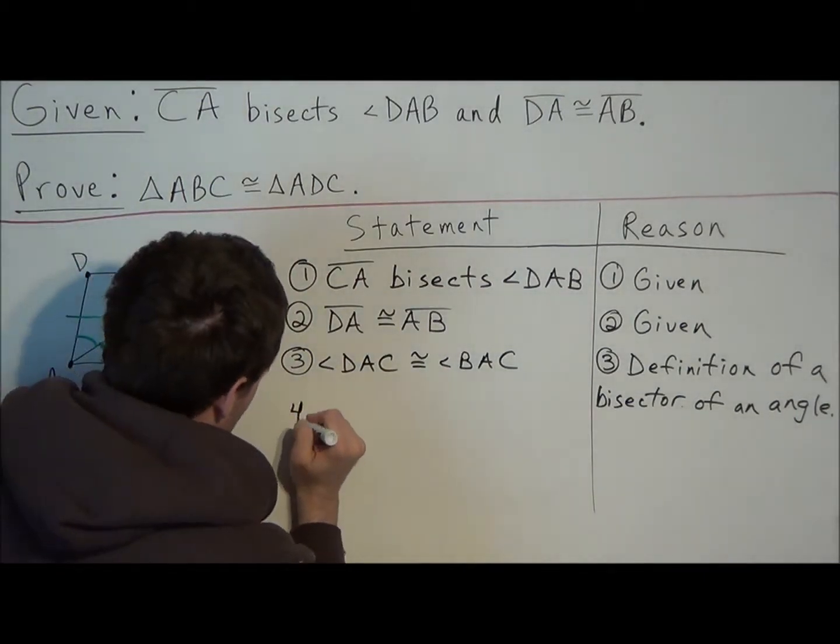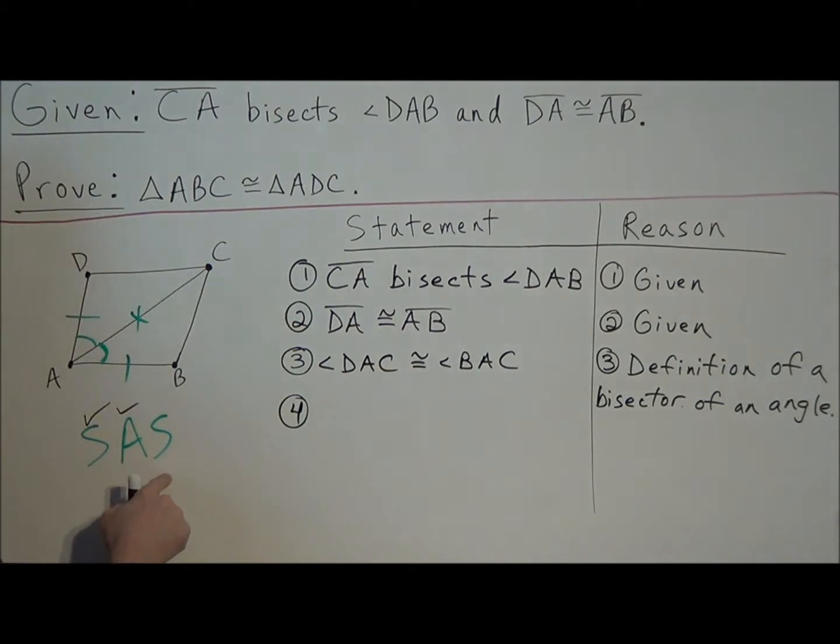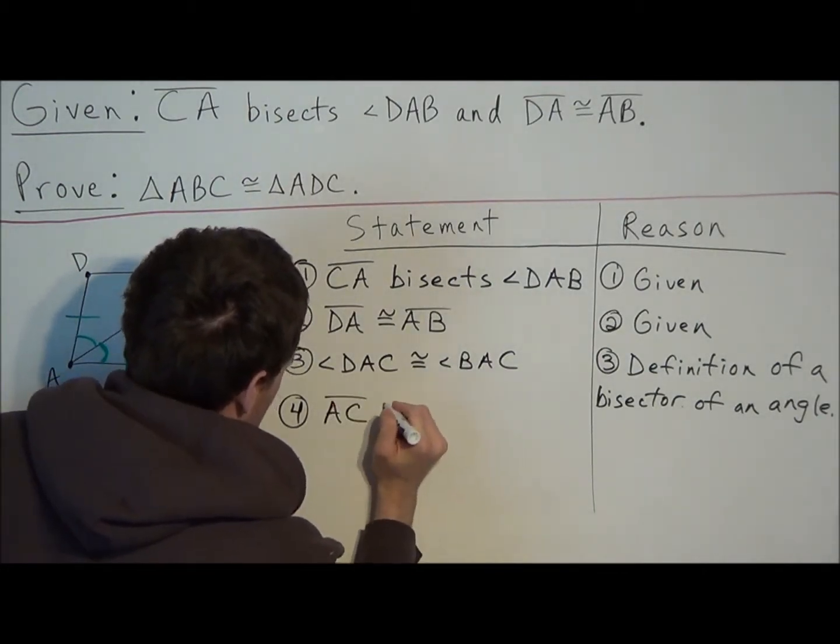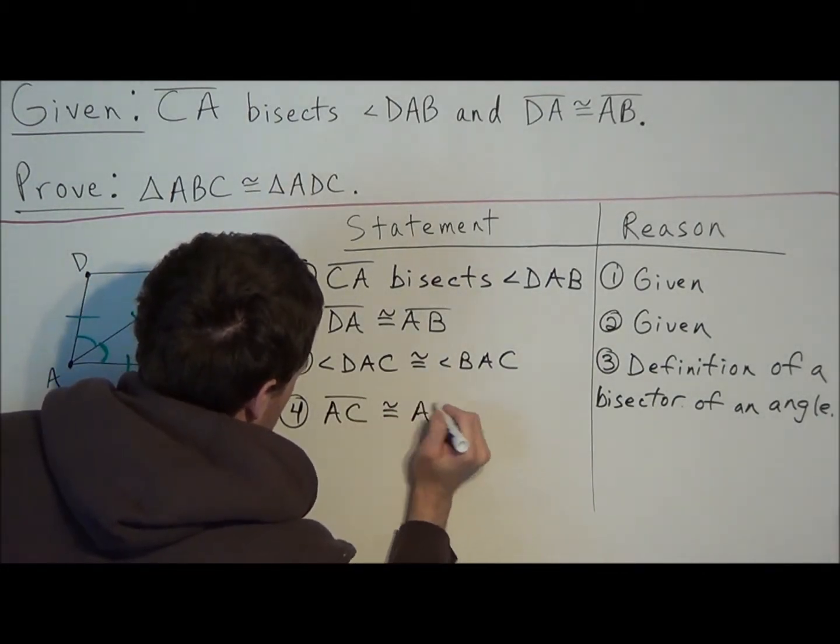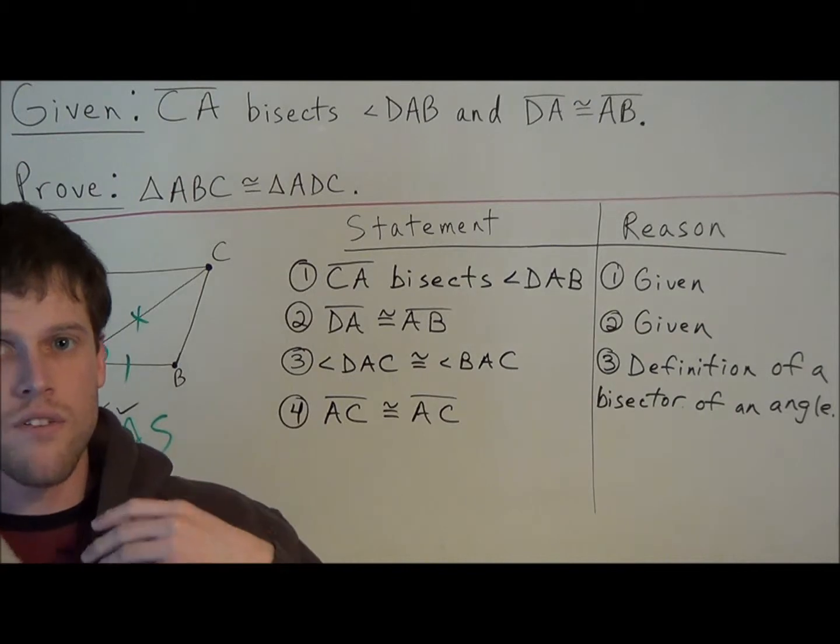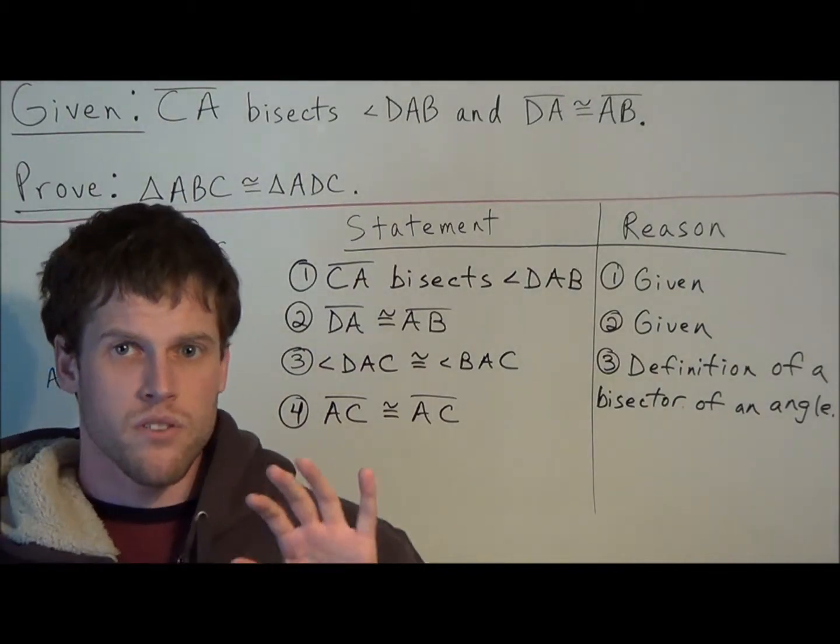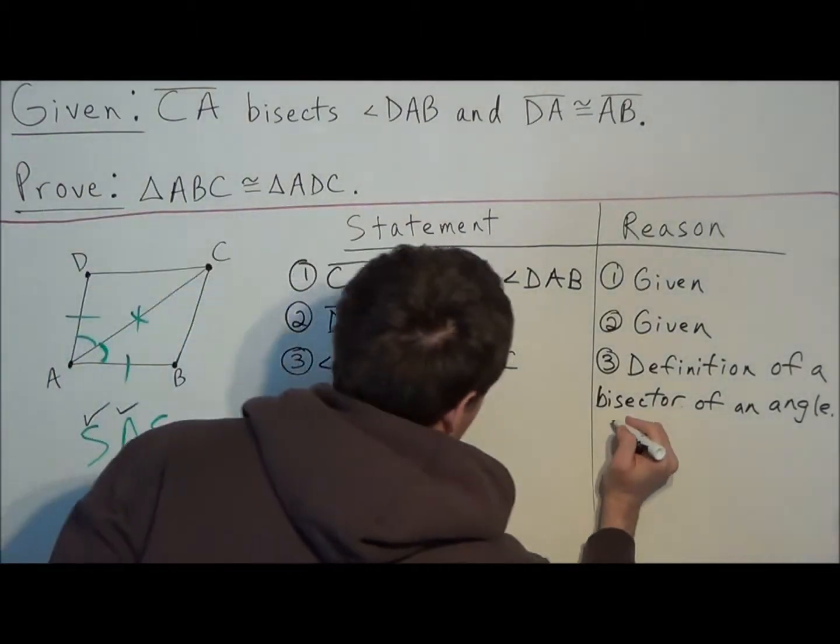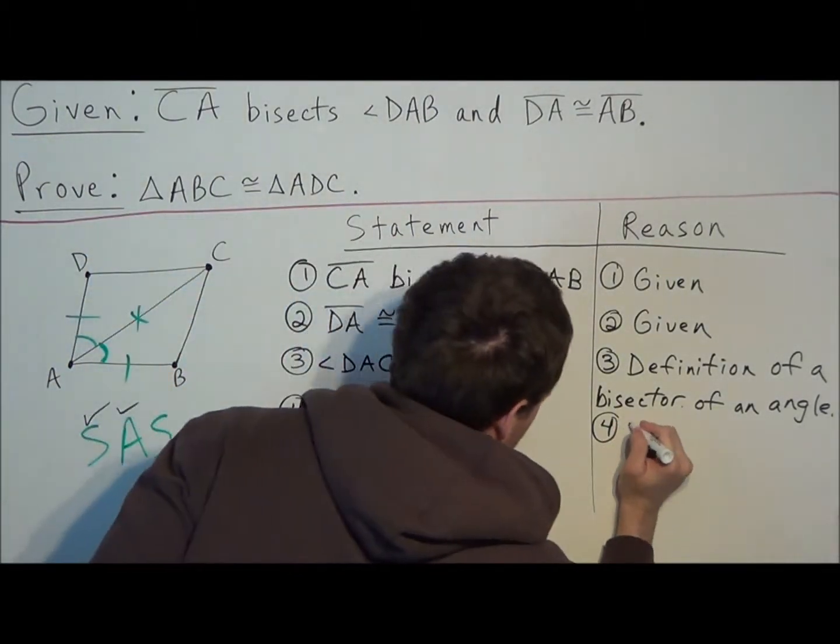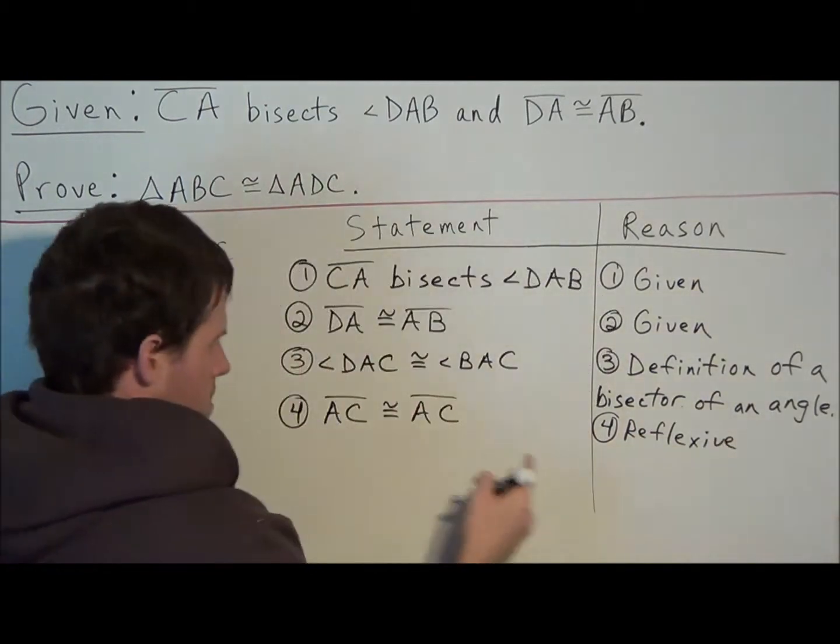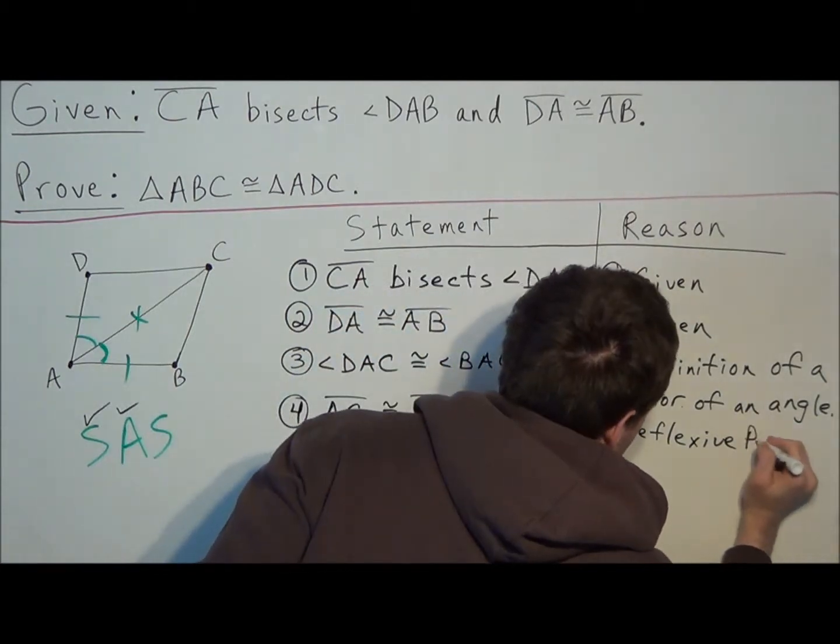Now last, we need to establish one more pair of congruent sides. But notice in both triangles, they're sharing side AC. So we could say line segment AC is congruent to line segment AC. And we think about why would something be congruent to itself? Well, think of a mirror. When you look in the mirror, you see yourself and it's an exact replica even though it's a flipped image. And your mirror image is congruent. So your reflection should remind you of the reflexive property. So AC is congruent to AC because of the reflexive property.